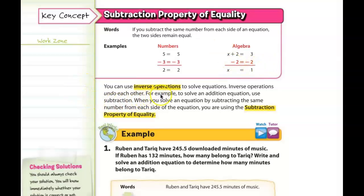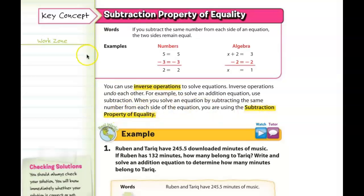You can use inverse operations to solve equations — inverse operations undo each other. For example, to solve an addition equation, use the subtraction property of equality. When you solve the equation by subtracting the same number from each side, that is the subtraction property of equality.